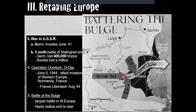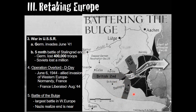Hitler hoped a victory would split American and British forces and break up Allied supply lines — attacking here to create a split so supplies could not get through. Explaining his reasoning, Hitler said: 'This battle is to decide whether we shall live or die. All resistance must be broken in a wave of terror.'